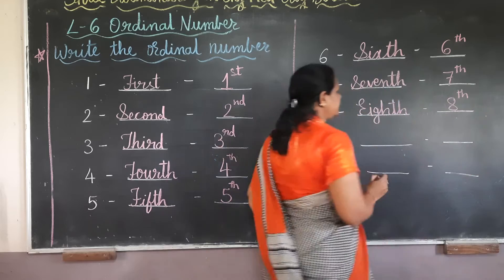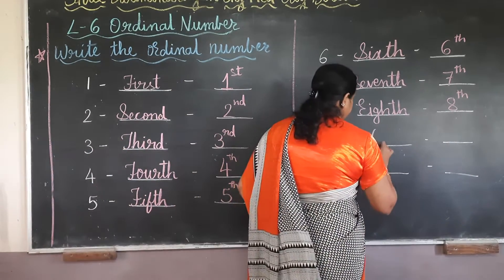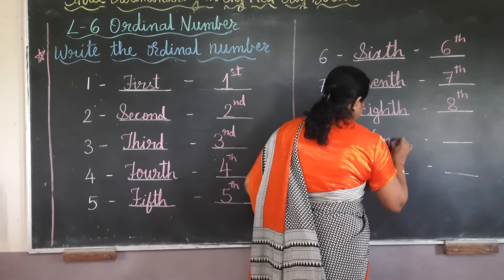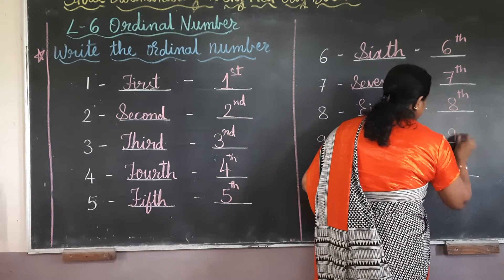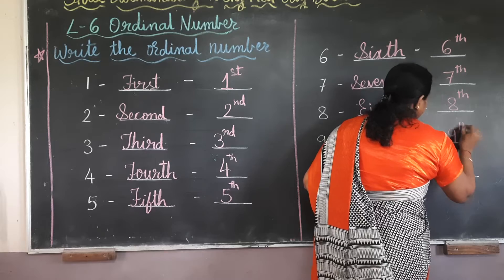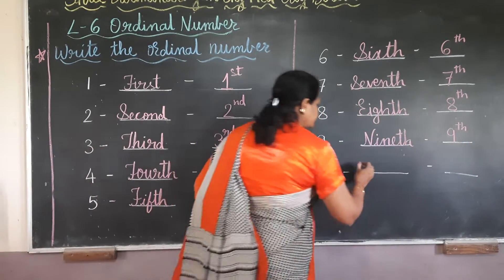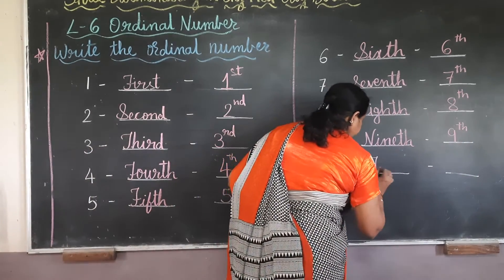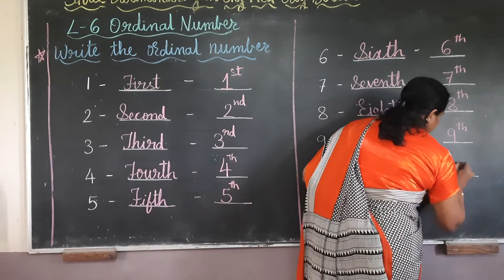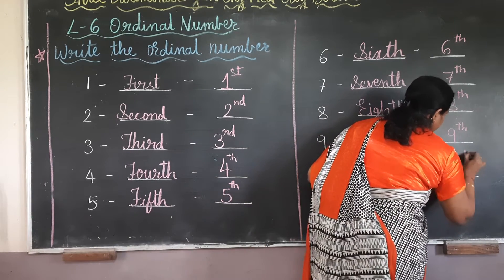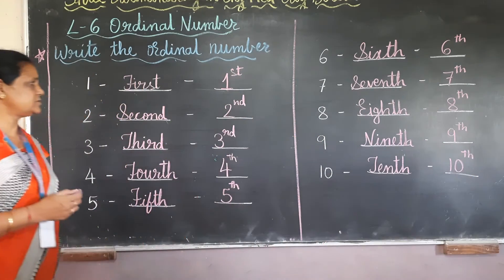For 9th, we say 9th position — ninth. For 10th, we say 10th position — tenth. Like this, you have to write the ordinal numbers.